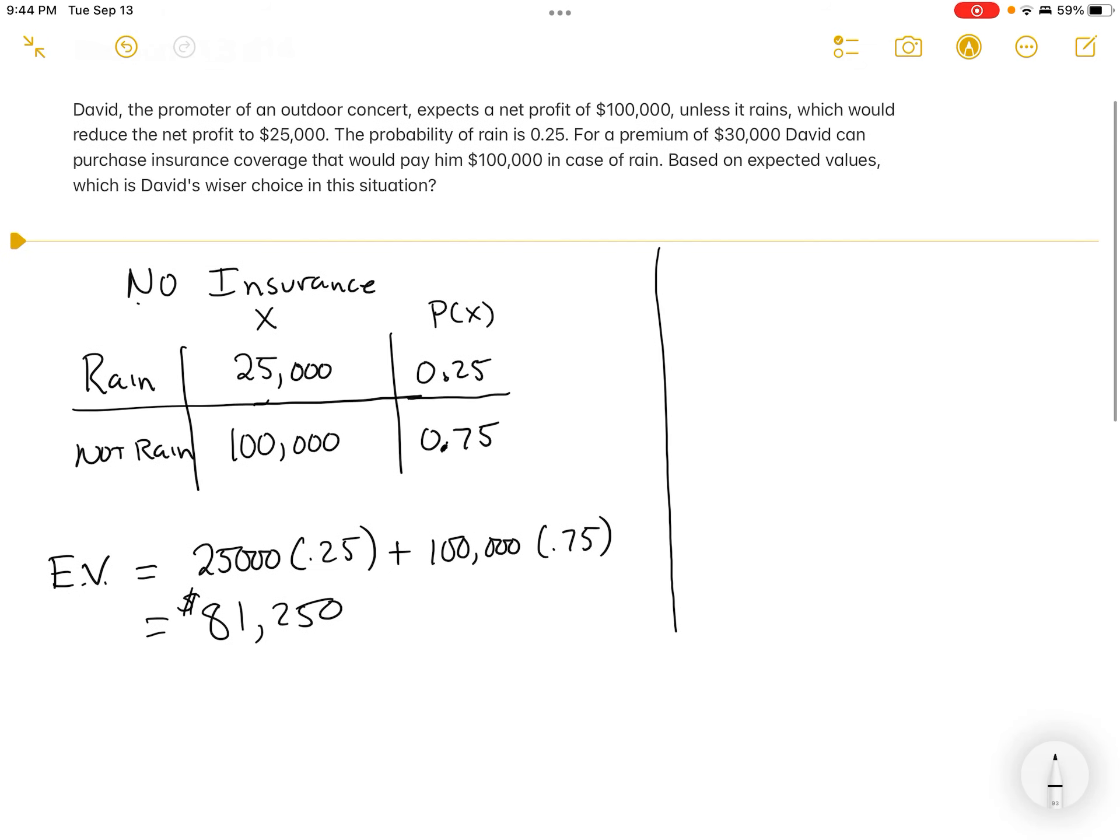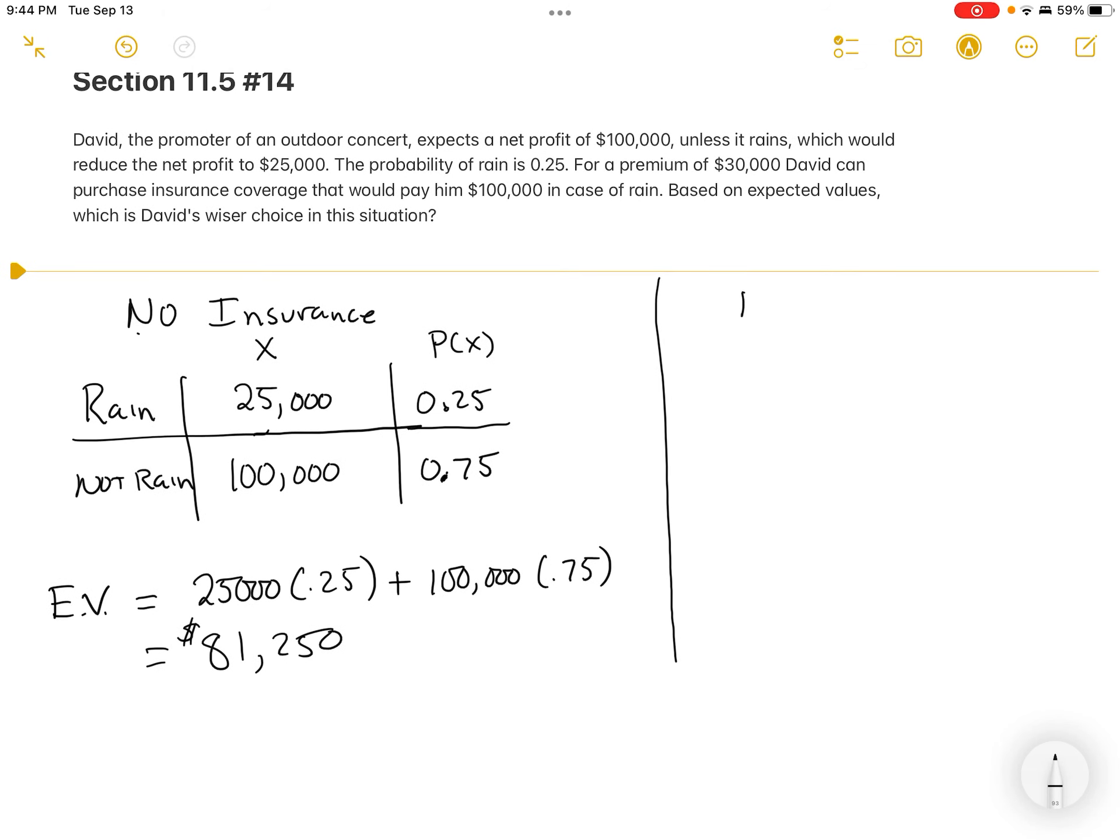Let me keep this language up here. So let's make this the insurance side. So you did get insurance. Now, same two things. It could rain or it could not rain. Let's go with the not rain. If it doesn't rain at all, then we know that that has a 75% chance of happening. And a 25% chance that it does rain. So those numbers don't change at all.